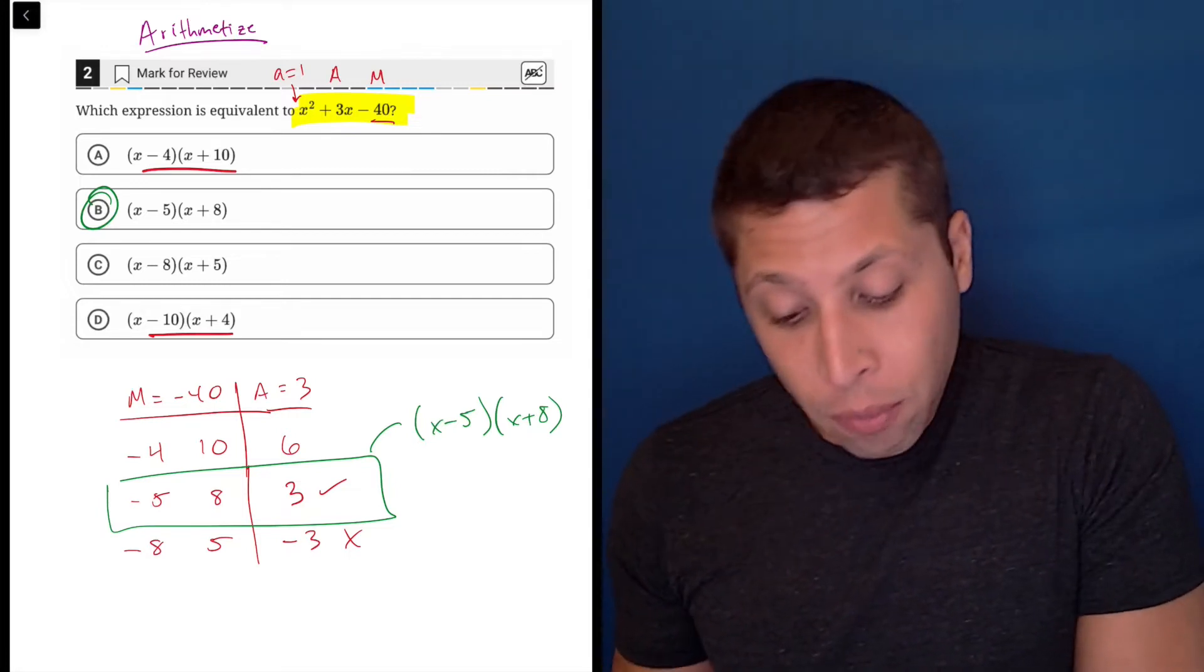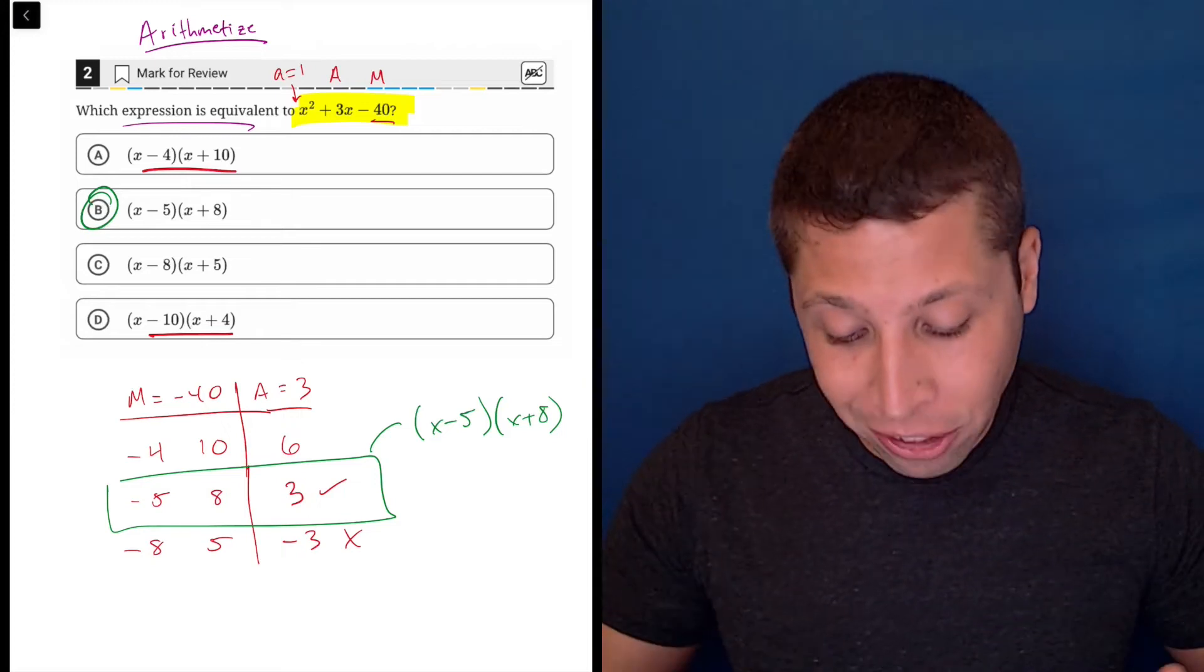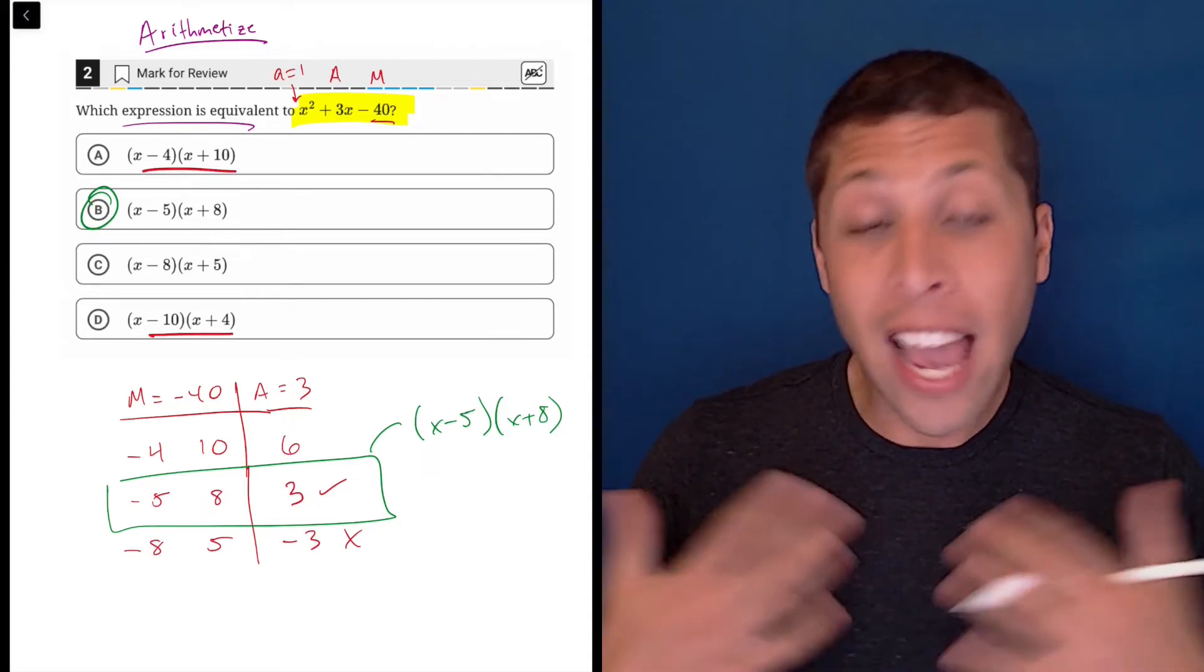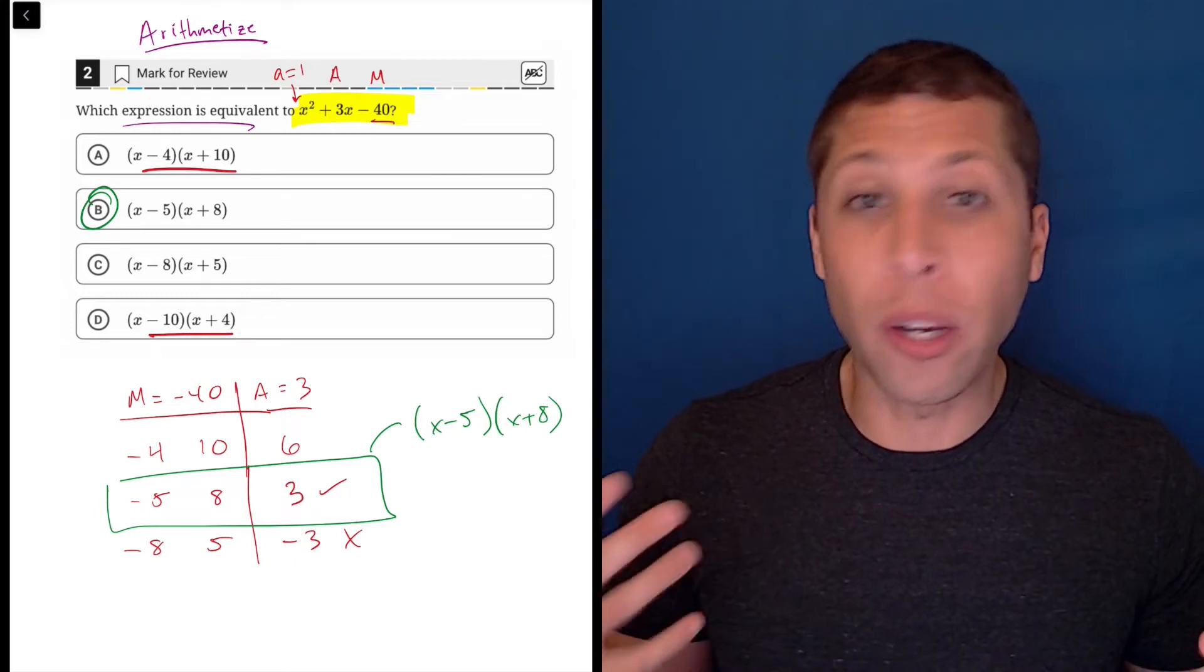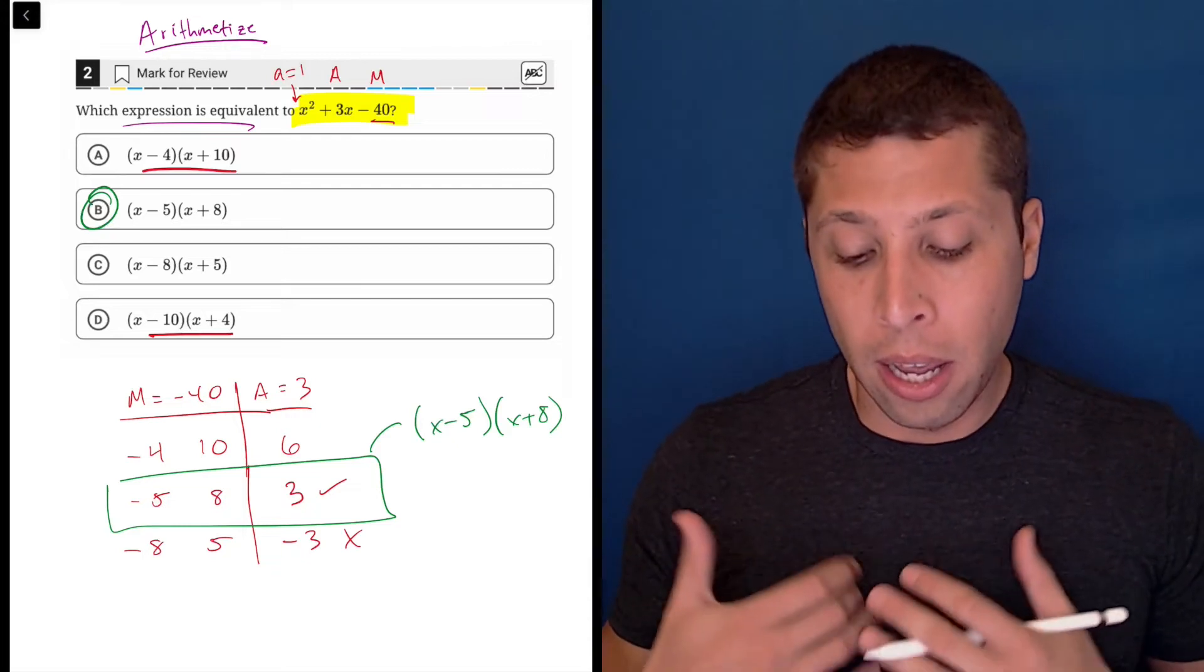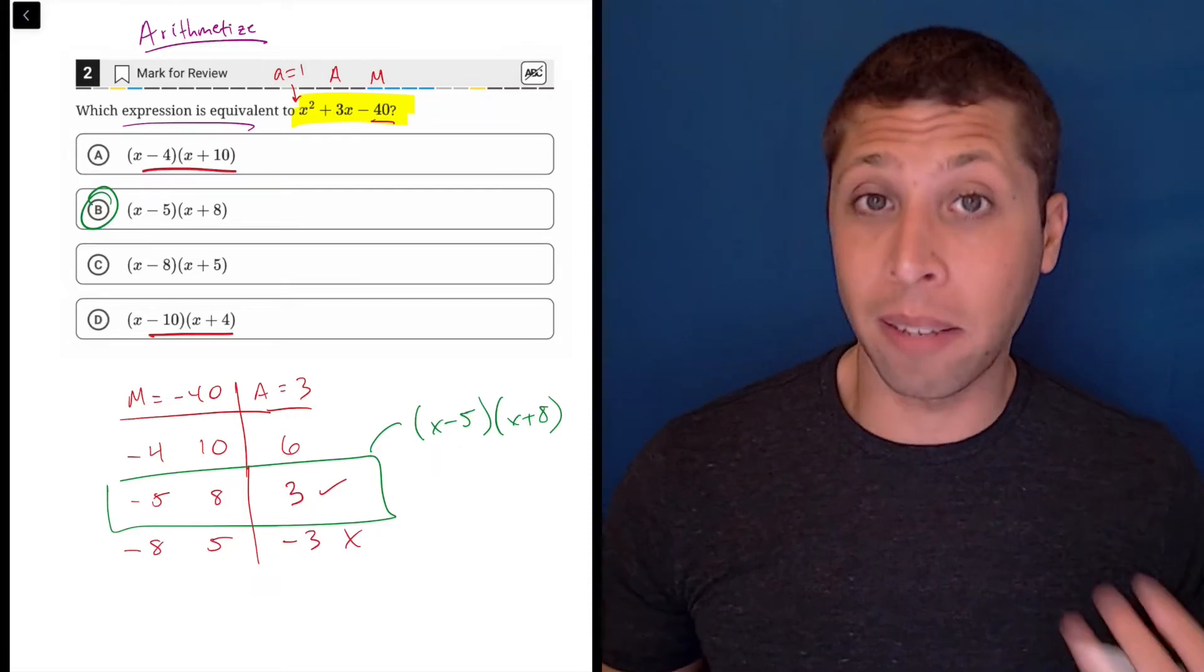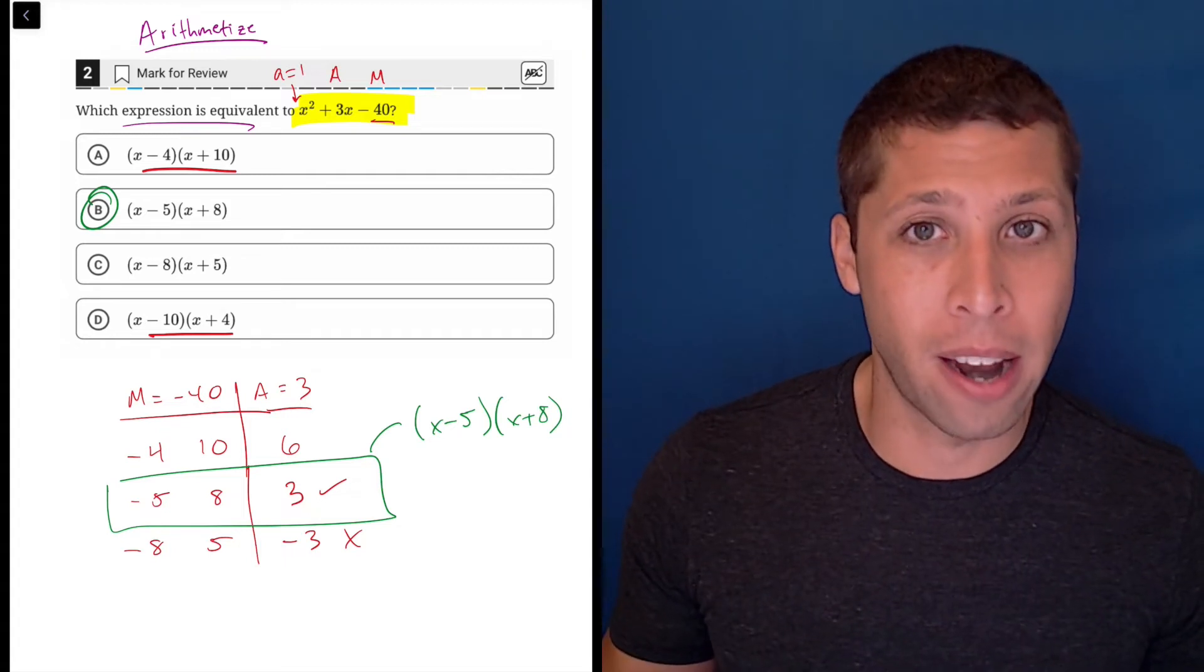Basically, if we have one of these questions that says which equation or expression is equivalent to the one we're given, and the x's here are not really numbers in the sense that we don't need to solve for them. We don't need to solve for x. It is just a placeholder. Arithmetize says, well, if x doesn't matter, maybe we can just make it whatever number we want and see what happens from there.